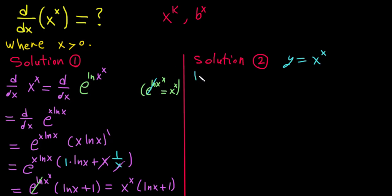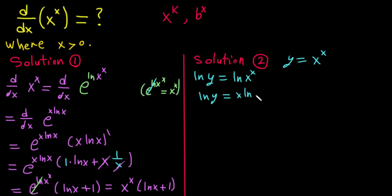Taking the natural logarithm of both sides gives ln y = ln(x^x). Using the logarithm power rule, this becomes ln y = x·ln x. Now we can take the derivative of both sides — this equation is implicit.